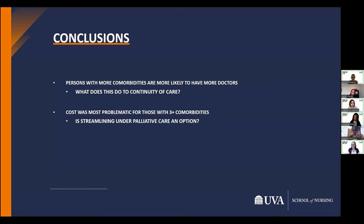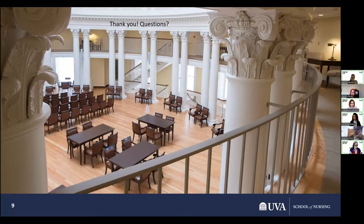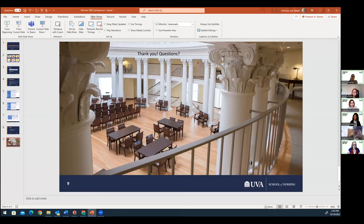We're still in the process of writing up the paper. We've wondered what having more doctors might be doing to continuity of care for those with three or more comorbidities — is information being passed between offices? We've also wondered whether cost being most problematic for those with three or more comorbidities could be addressed by streamlining multiple chronic disease care, potentially under one specialist such as a palliative care physician. Could we streamline care for someone who's extremely sick to get the best care possible?